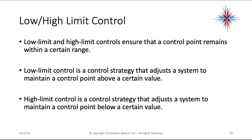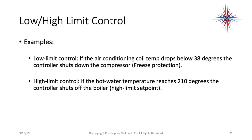Low-limit and high-limit control ensures that a control point remains within a certain range. Low-limit control adjusts the system to maintain a control point above a certain value — for example, if an AC coil temperature drops below 38 degrees, the controller shuts down the compressor (freeze protection). High-limit control maintains a control point below a certain value — for example, if hot water temperature reaches 210 degrees, the controller shuts off the boiler. High and low limit control are part of everyday systems.